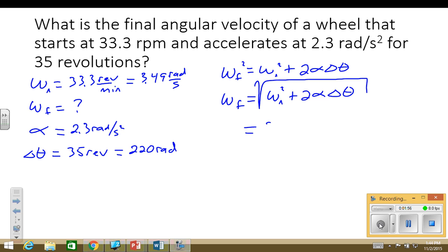Omega i is 3.49 radians per second, and we're going to square that plus 2 times alpha which is 2.3 radians per second squared times delta theta which was 220 radians. And then let's put that whole thing under the square root sign. So I would invite you to stop now and punch those numbers in the calculator to see what you get.